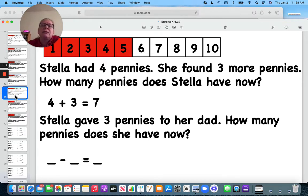Stella gave three pennies to her dad. So we're at seven. One, two, three. Seven minus three is four. Back to where we started.